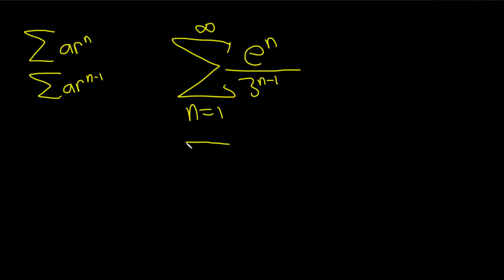So I'm thinking we can start by doing the following. This is the sum from 1 to infinity of e to the n over, and check this out, on the bottom we can do 3 to the n times 3 to the negative 1.